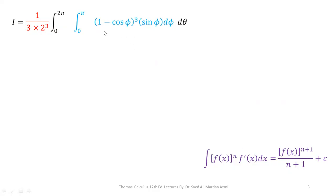Then in order to perform the integration, the derivative of (1 - cos φ) is 0 + sin φ and sin φ is available here, so we can apply this formula.